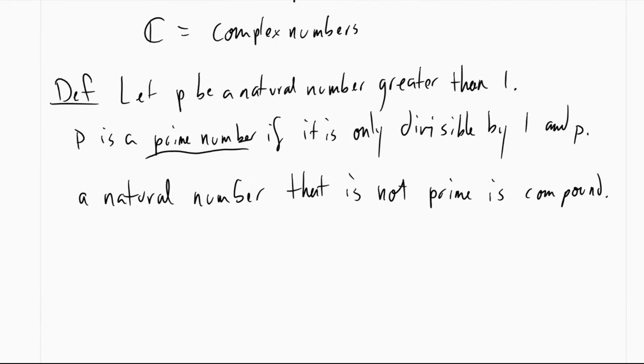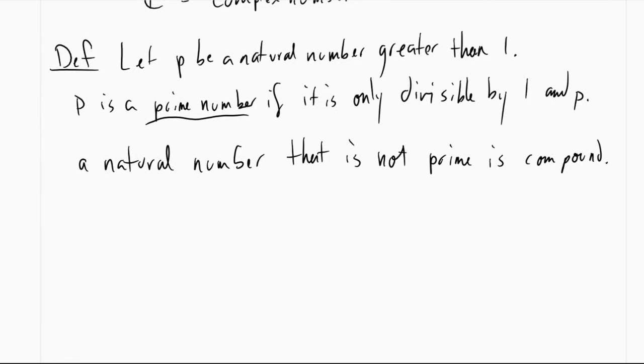So it occurs to me that I completely forgot to define another type of number in my numbers video. And as of this recording, I've already finished editing that. So I'm just going to define it now. We're going to let p be some natural number that is greater than one. We say that p is a prime number if it is only divisible by one and p. I want to note that we specifically say p has to be greater than one. And that has to do with a problem called prime factorization. We say that every number is exactly equal to one single multiplication of prime numbers. And if we said that one is a prime number, then things get a little complicated. But just know that the smallest prime number is two and one is not a prime number. We also say that a natural number that is not prime is considered compound.